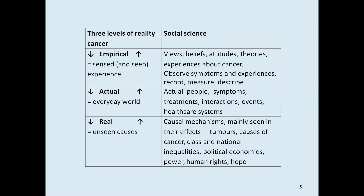The three levels applied to cancer: the empirical level is when the patient talks about their views, beliefs, and experiences, and doctors observe the symptoms and record, measure, and describe what's going on. The next level is that medicine accepts there are actual people, actual symptoms, treatments, interactions, and events — as health researchers, we have to accept that there are actual real bodies. And then critical realism adds that we need to look at the unseen causal mechanisms such as tumours, the causes of cancer. In social terms, health is so much affected by class, international inequalities, political economies, power, human rights, hope — these vital and valuable unseen levels which critical realism is so useful in helping us to explore.